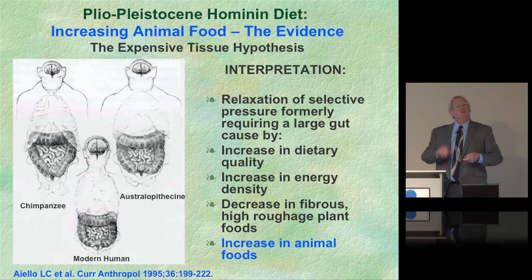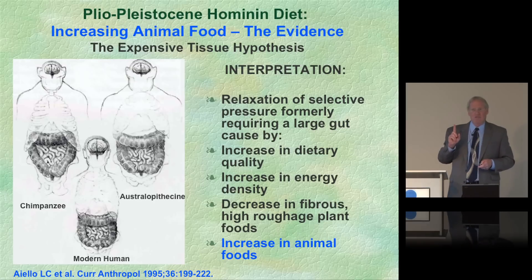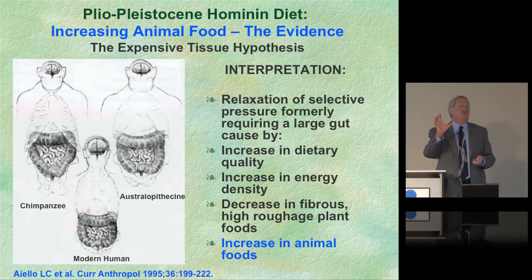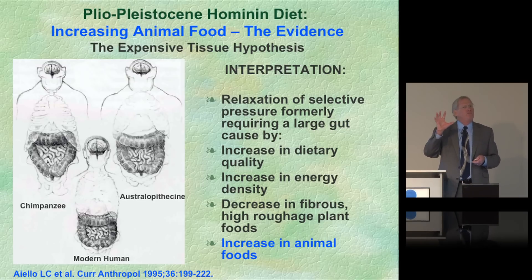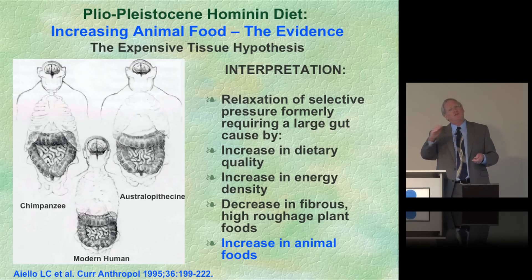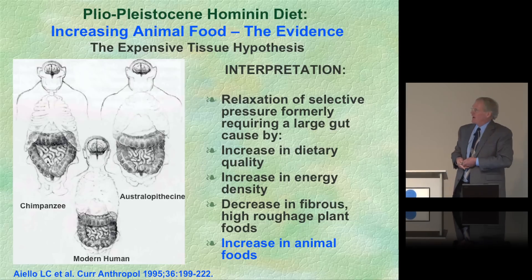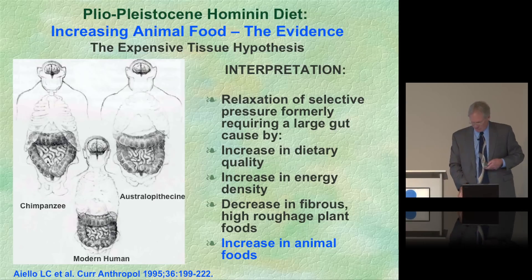How did that happen? The chimpanzee diet is primarily fruit and plant-based food. As we started eating more and more meat — which is more calorically dense — that was the selective pressure that allowed us to evolve a larger brain.